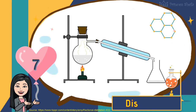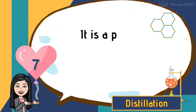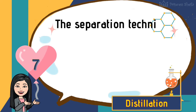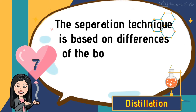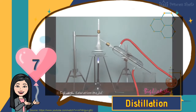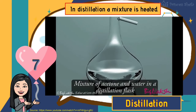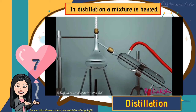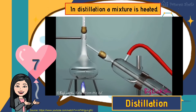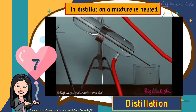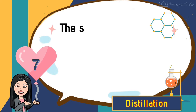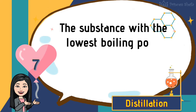Seventh is distillation. It is a process of separating liquids from a solution. The separation technique is based on differences in the boiling point of the substances in the mixture. In distillation, a mixture is heated, and the substance with the lowest boiling point boils to vapor and condenses to liquid.